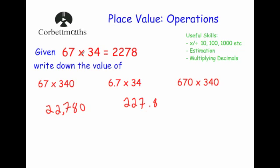And finally, instead of having 67 times 34, we've now got 670 times 340. Each number has become 10 times bigger, so that means we're multiplying our answer by 10 and then by 10 again — in other words, we're going to make it 100 times bigger. So our answer is 227,800.